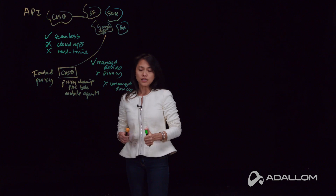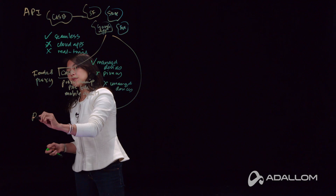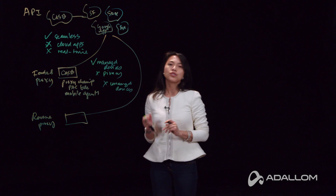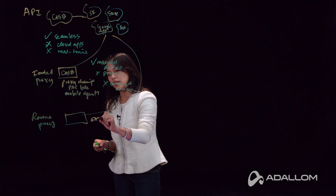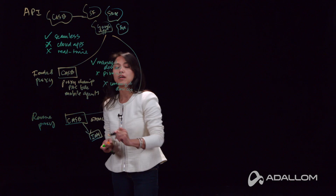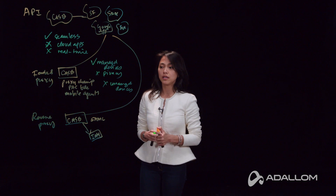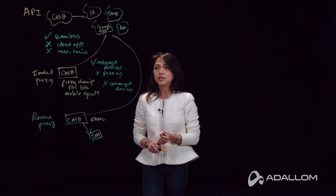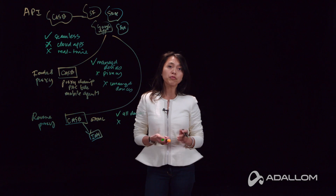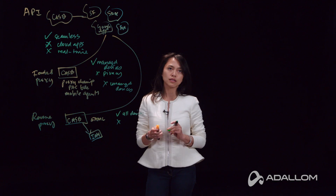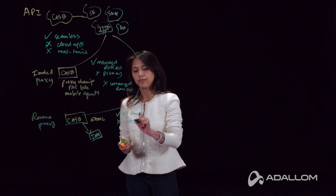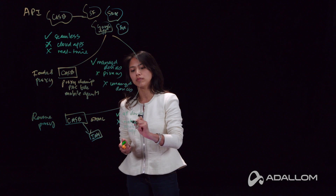The third option is reverse proxy. With the reverse proxy approach, you are redirecting traffic to the cloud application through the SAML authentication mechanism. The CASB sits here and essentially integrates with any sort of IAM that you have. A reverse proxy is great because you are redirecting all traffic, so this works for managed or unmanaged devices. But the downside is you are rewriting URLs — so instead of going directly to salesforce.com, you may go through proxy.salesforce.com, and that may not work for native mobile clients or native mobile apps.